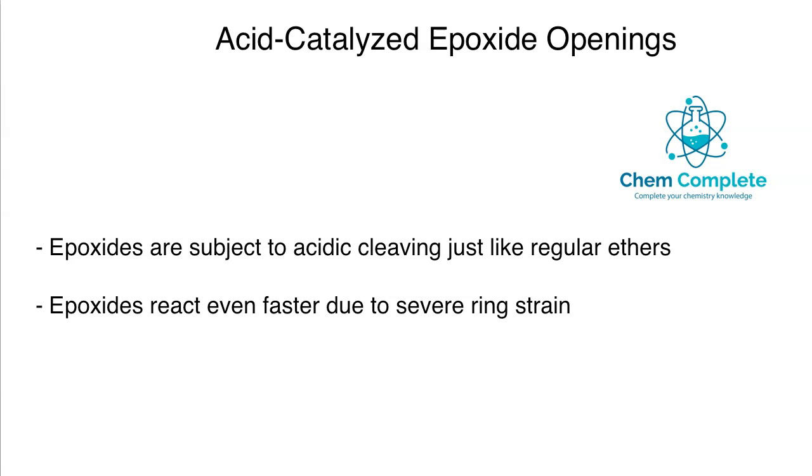Epoxides are a type of cyclic ether, a three-membered ring, and they can undergo both acid and base openings. The acid ones tend to be more confusing for students because they can behave in different manners depending on the substitution pattern. We want to look at the stereochemistry as well as the regiochemistry involved.